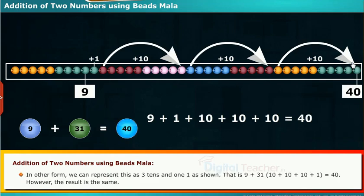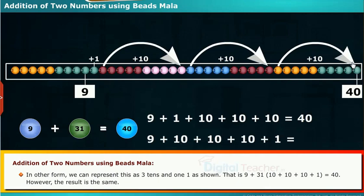In another form, we can represent this as 3 tens and 1 one, as shown. That is, 9 plus 10 plus 10 plus 10 plus 10 plus 1, which is equal to 40. However, the result is the same.